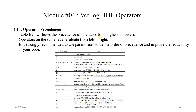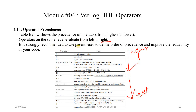Now let's see operator precedence. When we have an expression or boolean equation with many operators, we need to determine which operation has to be performed first. Operator precedence is given from highest to lowest in a table. Operators on the same level evaluate from left to right. It is strongly recommended to use parentheses to define the order of evaluation and improve the readability of the code — it is always a best practice.